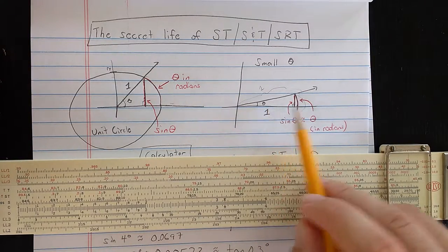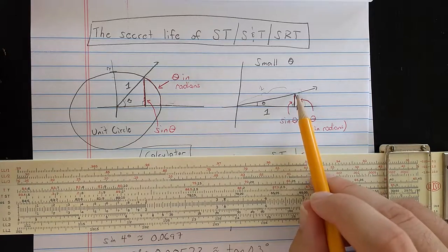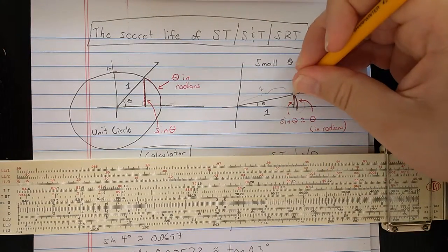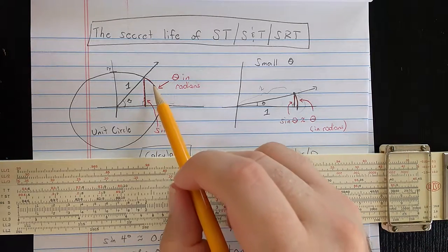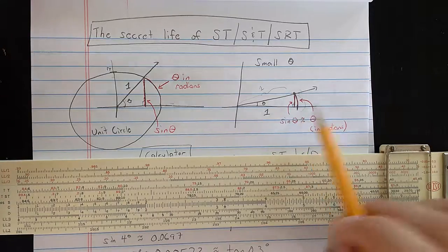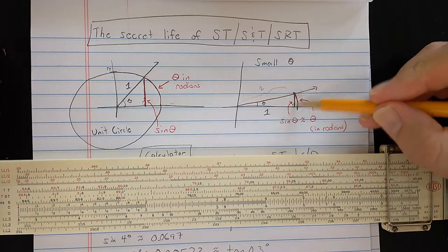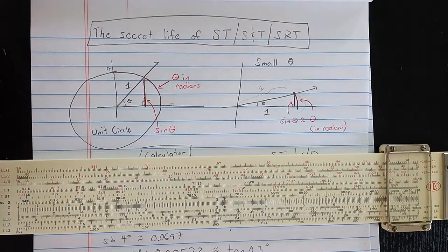When the angle starts increasing from zero, basically this point here on the unit circle is kind of going directly upward. And then it kind of starts going more to the left as you get a larger angle. And so this length here and the arc traced out are approximately the same length for a small angle.